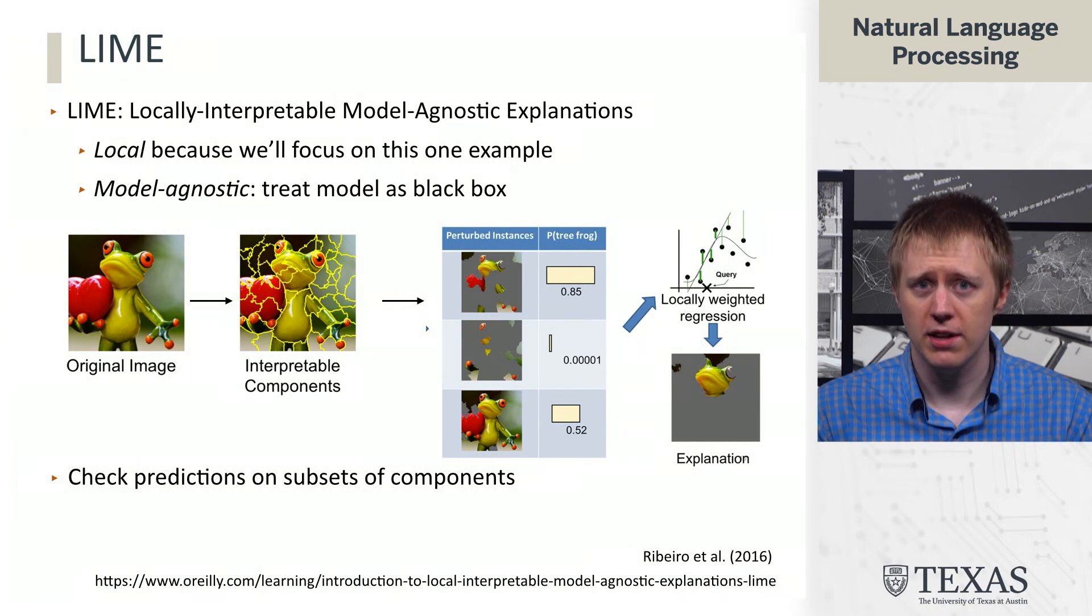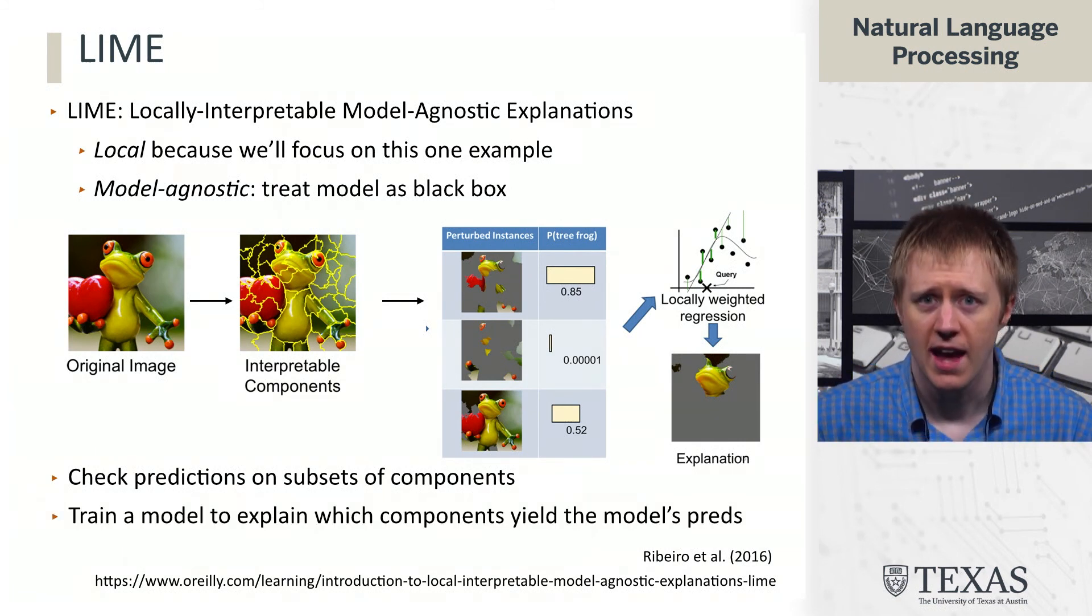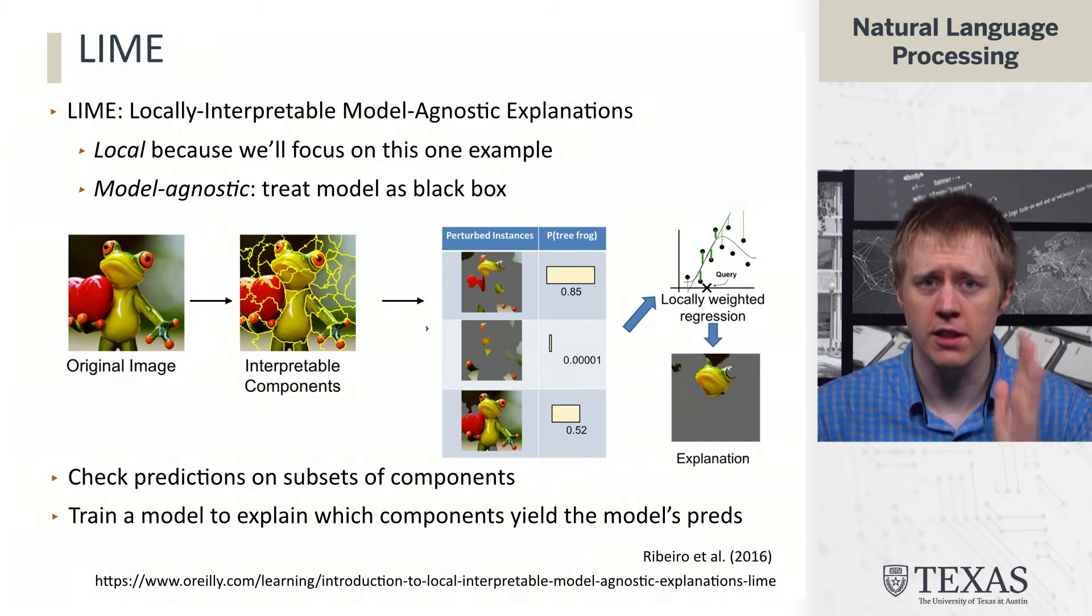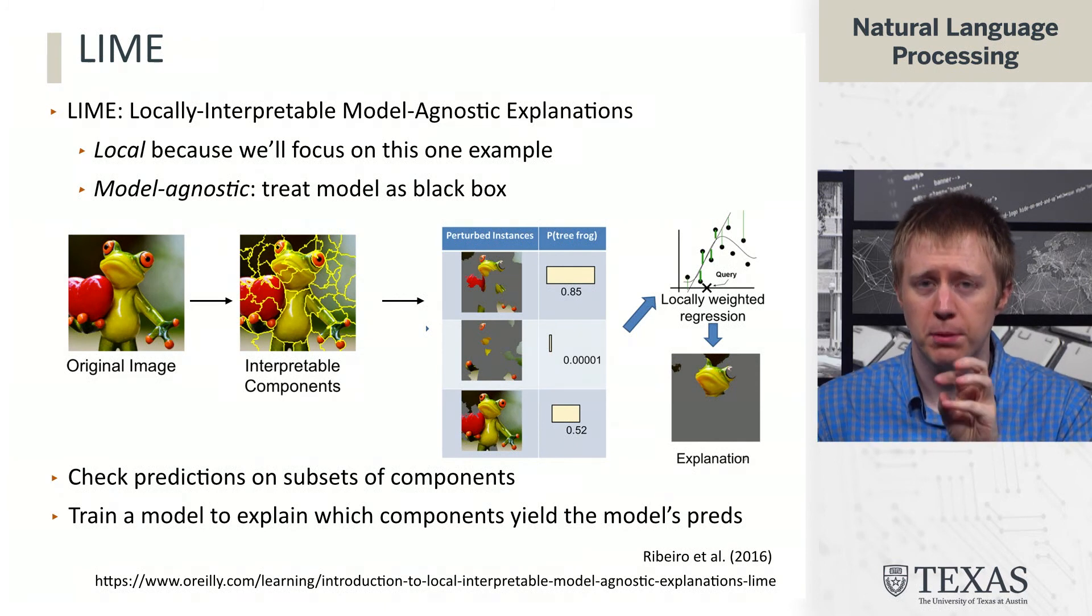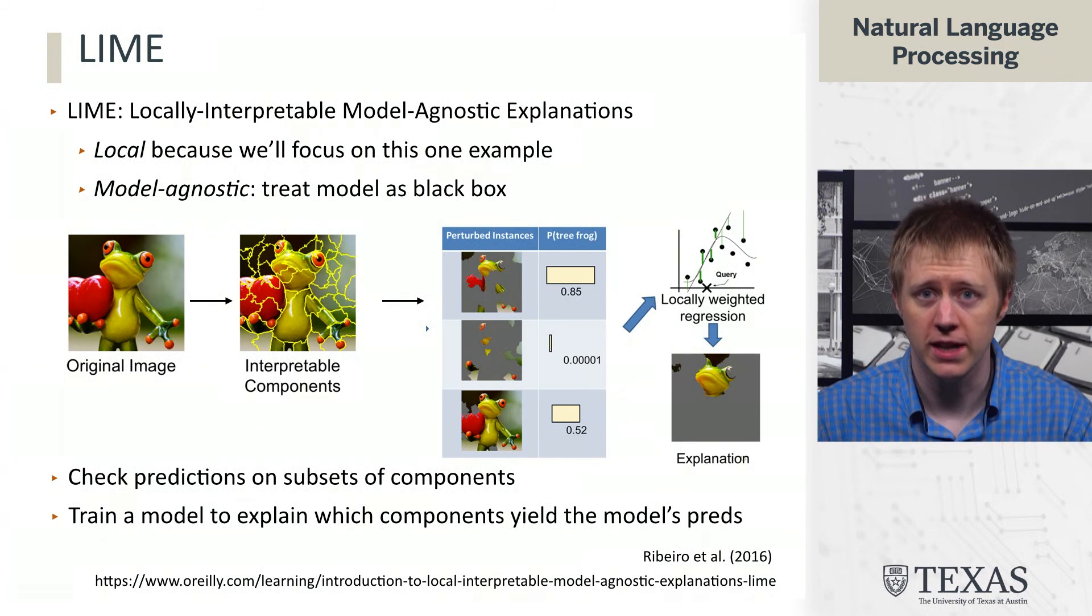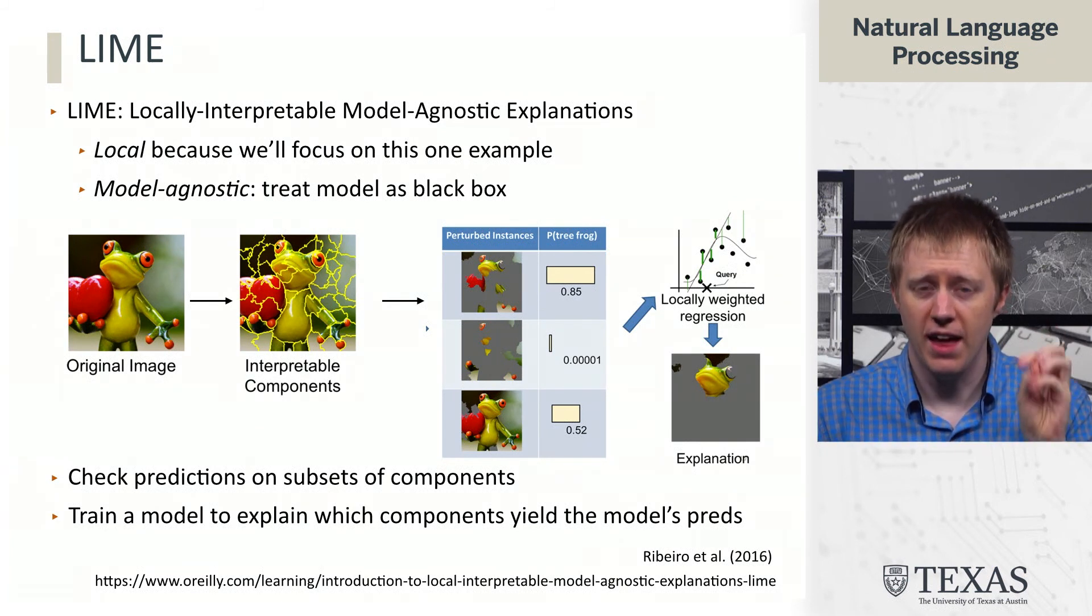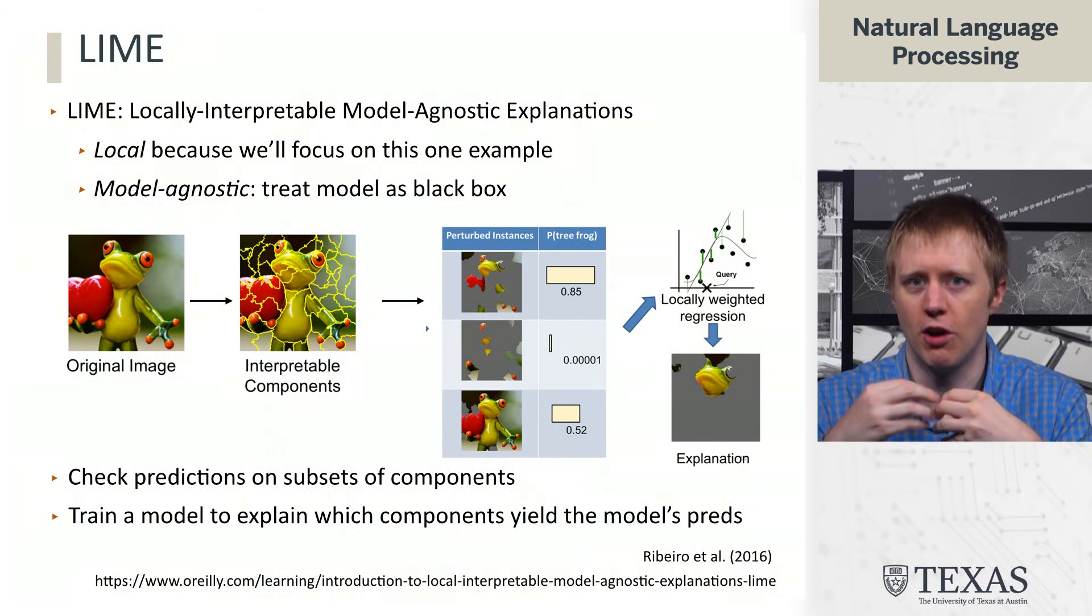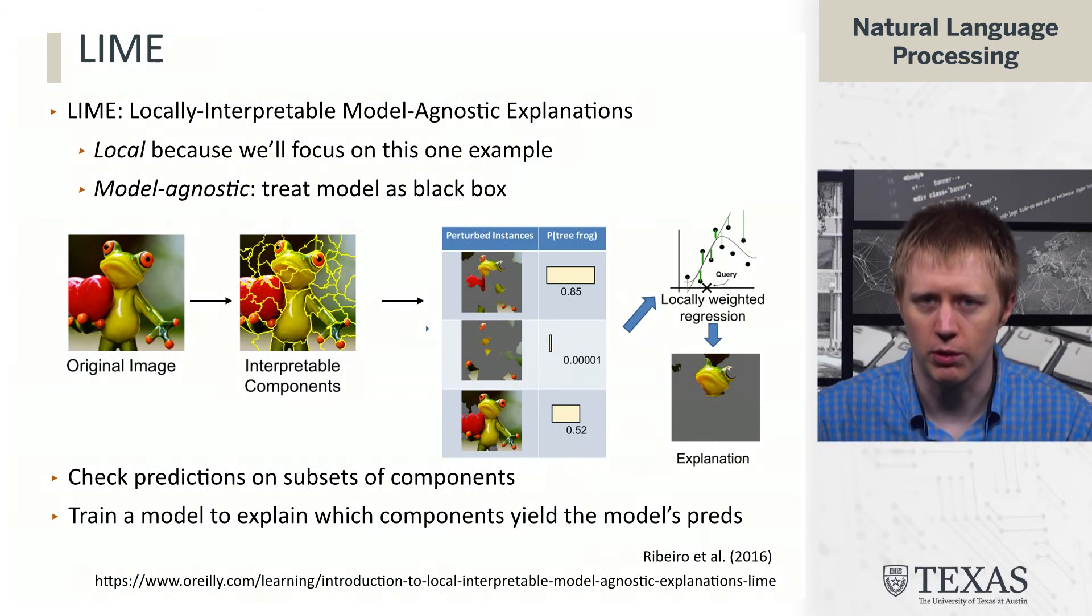So the basic idea here is that we want to take these predictions on subsets of these components. And then we actually want to train another model that explains which components contribute to the model's predictions most strongly. And then whatever that model thinks is important is what's overall the explanation that we're going to return.